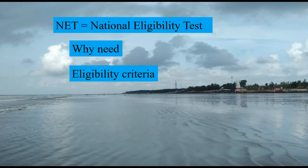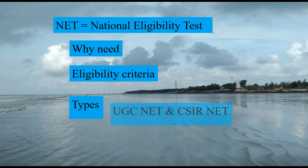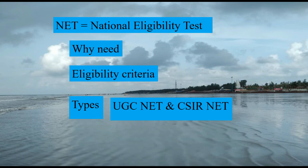The basic eligibility criteria to appear in NET examination is completing a master's degree with 55% marks, or currently pursuing a master's degree. For more details, visit the UGC NET or CSIR NET website. There are mainly two types of NET examination: UGC NET, conducted by the University Grants Commission for arts and commerce students, and CSIR NET, conducted by the Council of Scientific and Industrial Research for science students.